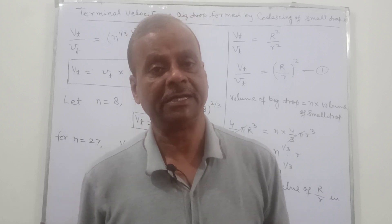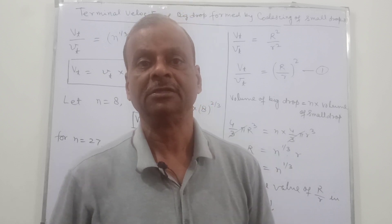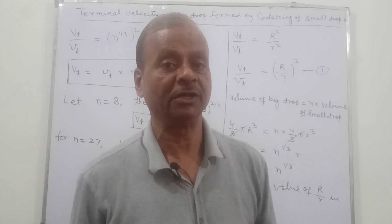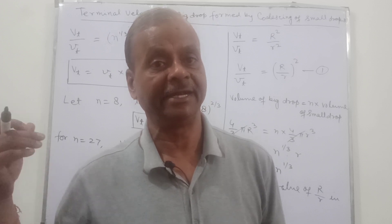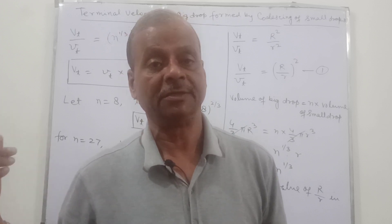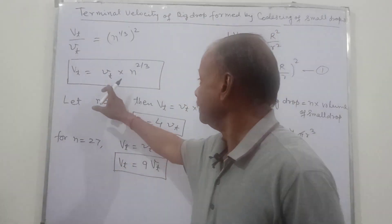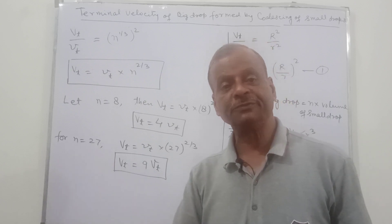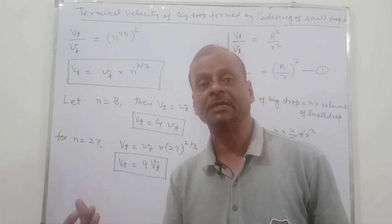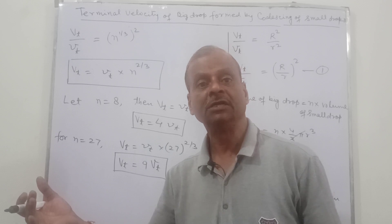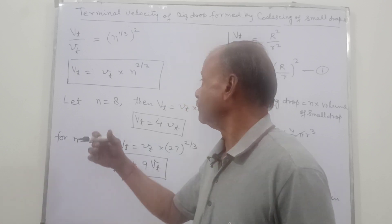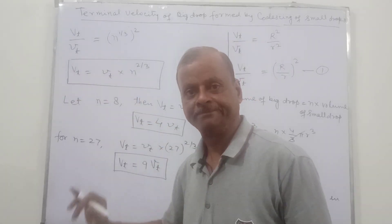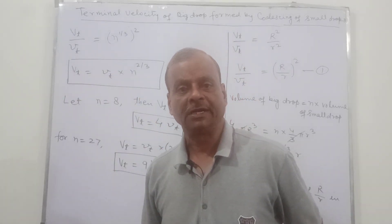This question has been asked many times in competitive exams. You can use the direct formula — just put the value of N and Vt of the small drop to find the terminal velocity of the big drop. Or the reverse: if the velocity of the big drop is given and it breaks into N small drops, you can find the velocity of each small drop using the same relation.